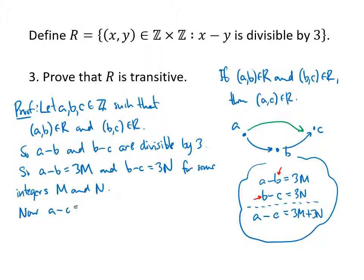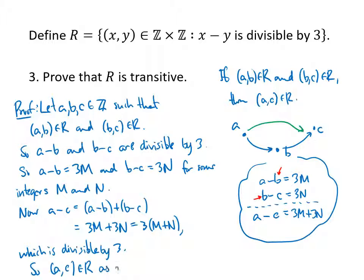So a minus c is actually a minus b plus b minus c. That's 3M plus 3N, which is 3 times the quantity (M plus N). So that's divisible by 3. And that's going to tell me that (a,c) is in my relation as desired. And that finishes the proof of that if-then.